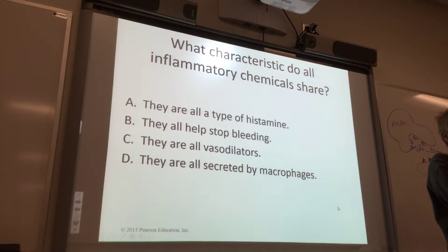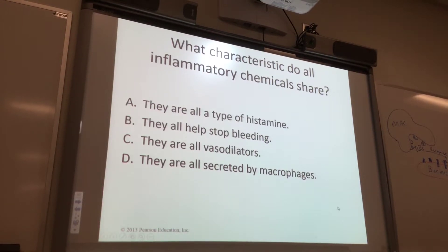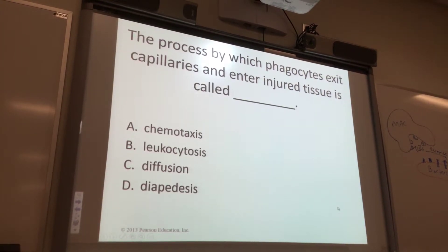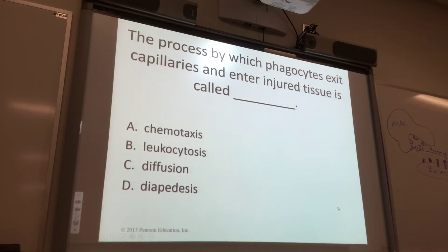If you said C, you are correct — they're all inflammatory chemicals. They all do vasodilation because they all want to make the blood vessel bigger to get more cells to the area. If you said D, you are correct — D for diapodesis.